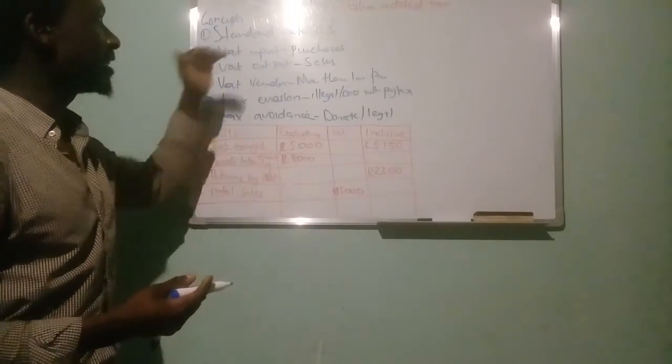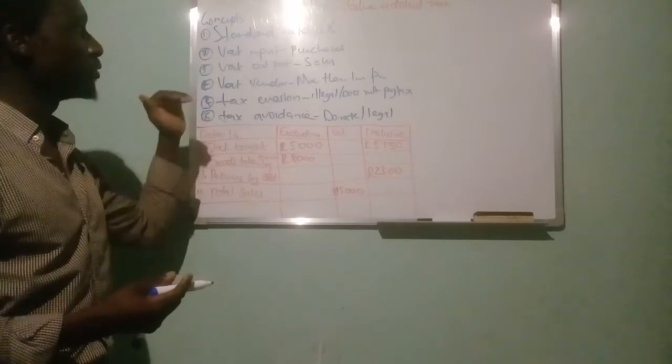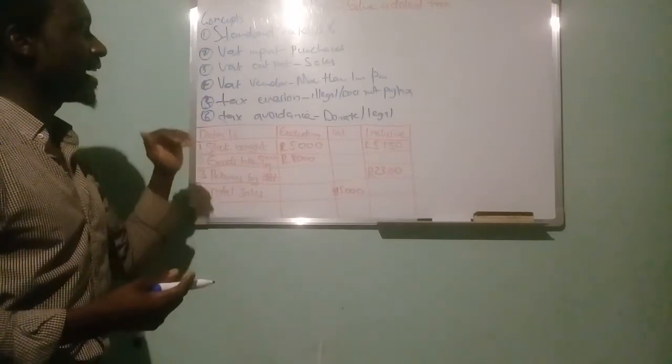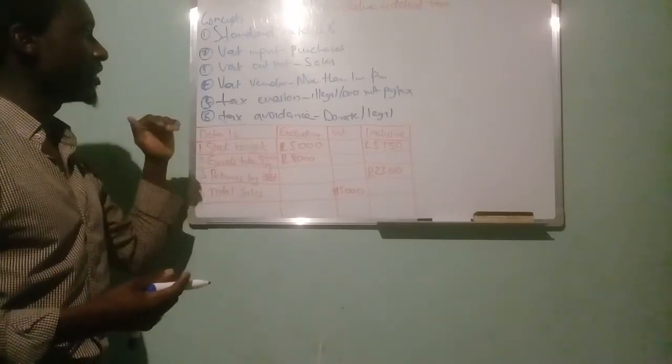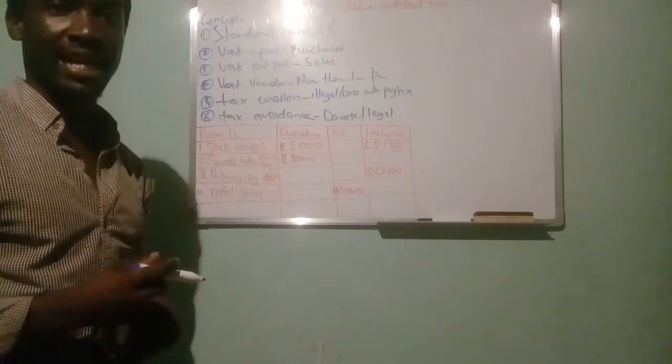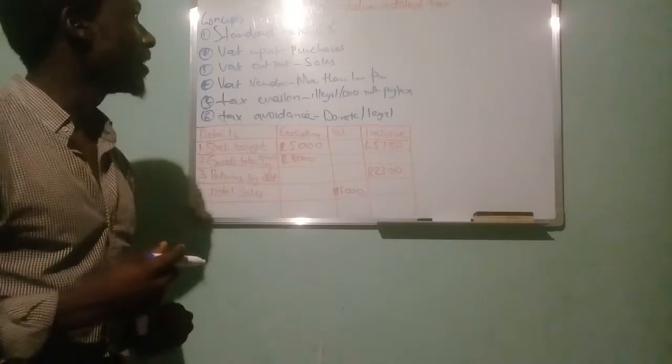So to summarise, we have the standard rate, VAT input, VAT output, VAT vendor, tax evasion, and tax avoidance.